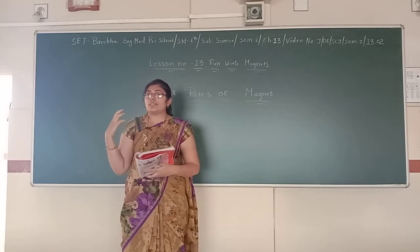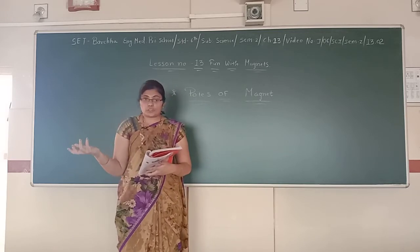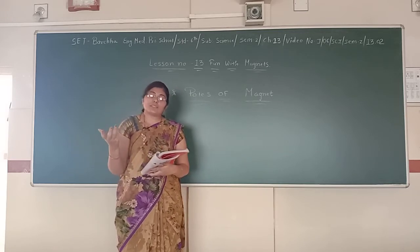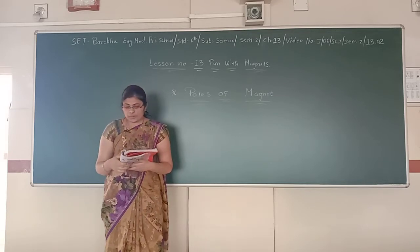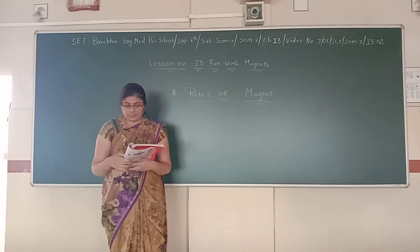And also magnets of a different shape. You can take different types of magnets, magnets of different shapes like bar magnet, horseshoe magnet, etc. Draw a diagram to show the way iron filings stick to the magnet.